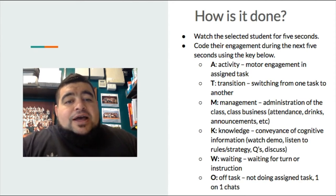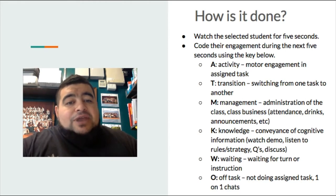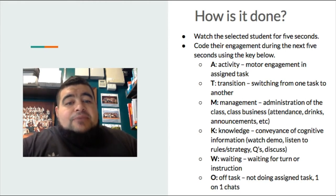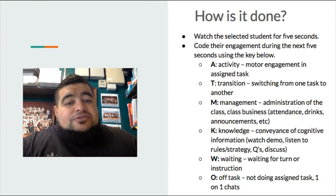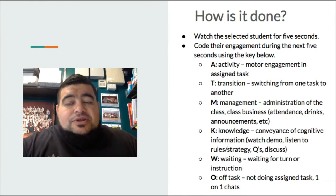So if a student is physically active, we give them an A. T is for transition, M is for management, K is for knowledge, W is for waiting, and O is for off task. We'll go through those one by one.